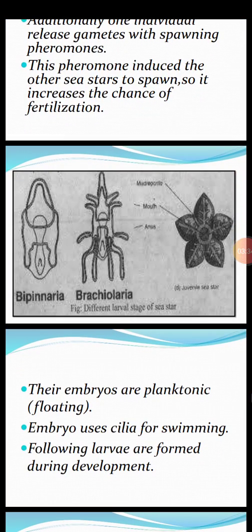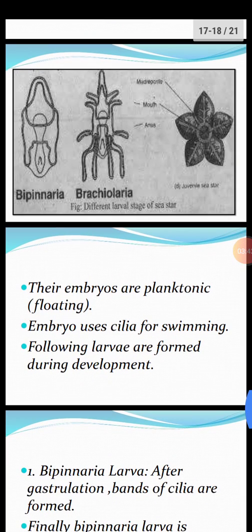Diagrams of three types of larvae are shown: bipinnaria, brachylaria, and the juvenile sea star. Their embryos are planktonic — free floating — and use cilia for swimming movement.